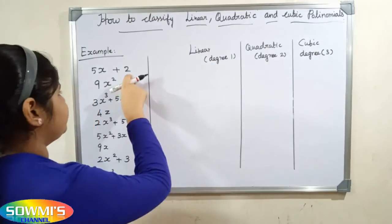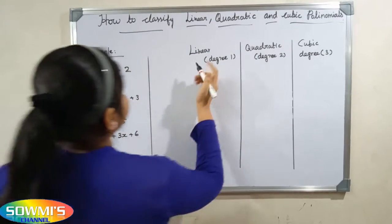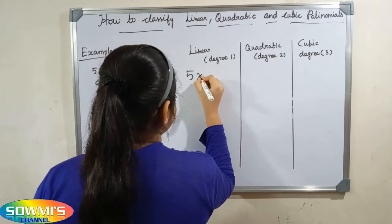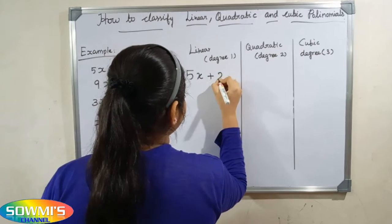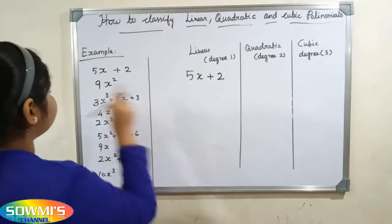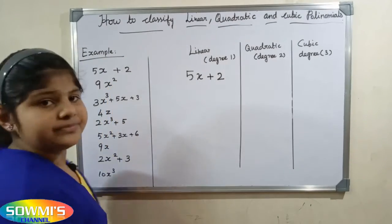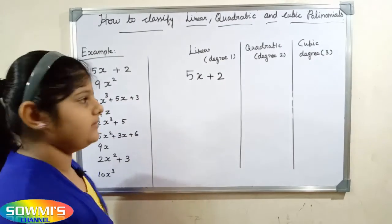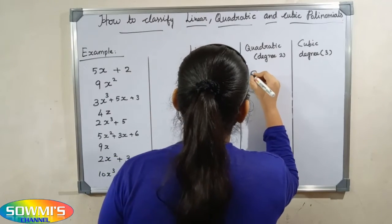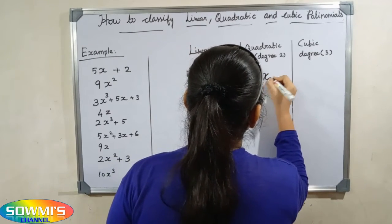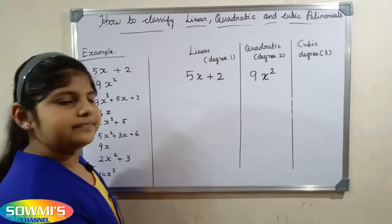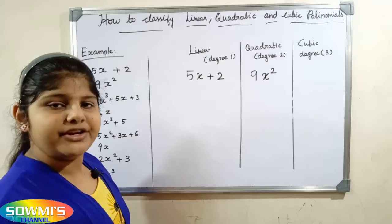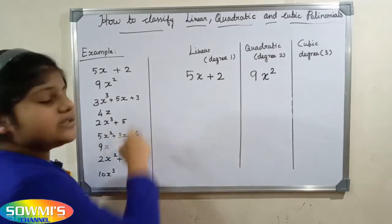Now we will classify. For example, 5x plus 2 — here the degree is 1, so this is a linear polynomial. 9x squared — here the degree is 2, so this is a quadratic polynomial. 3x cubed plus 5x plus 3 — here the degree is 3, so this is a cubic polynomial.